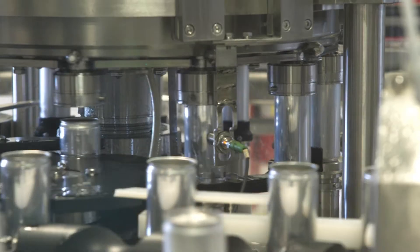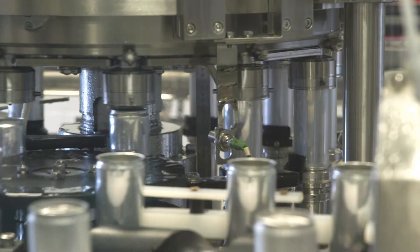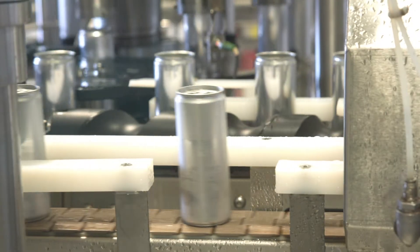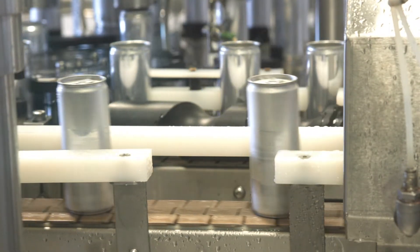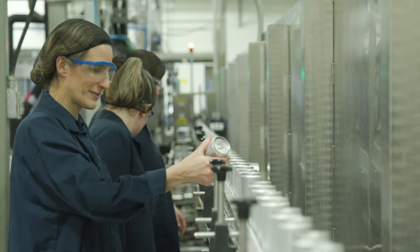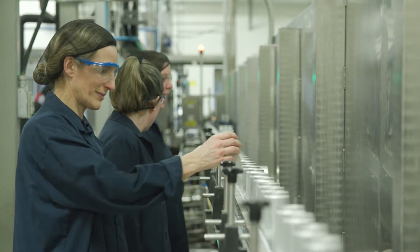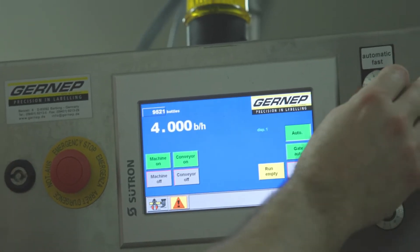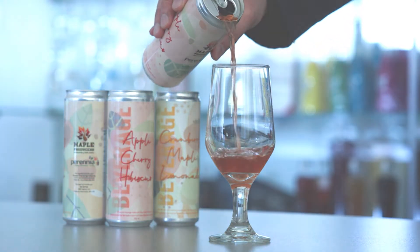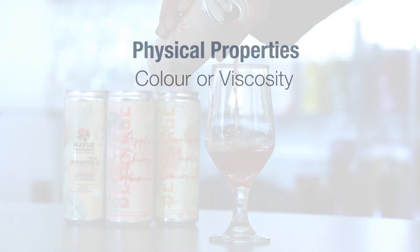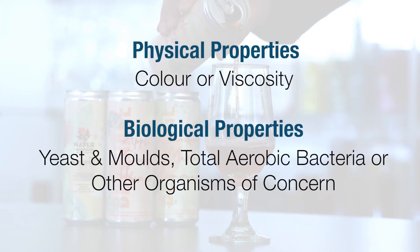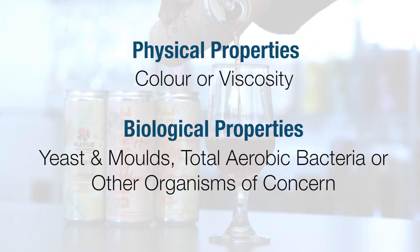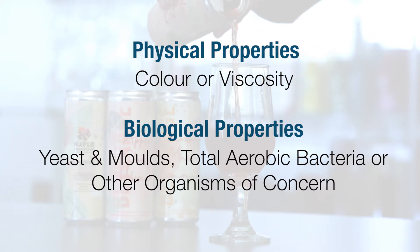For example, consider a beverage product. You might have chemical specifications such as pH and Brix — both important parameters for your beverage that can affect quality, safety, and taste. Physical properties might include color or viscosity. Biological properties would include microbial limits such as yeast and molds, total aerobic bacteria, and other organisms of concern.